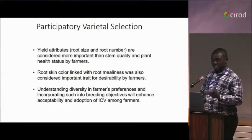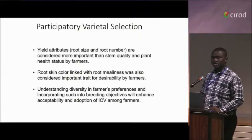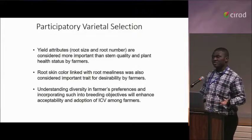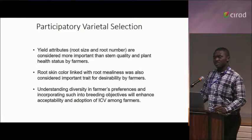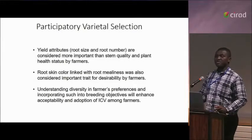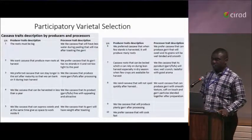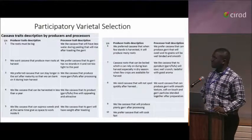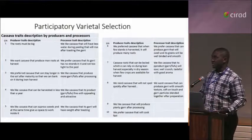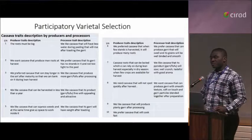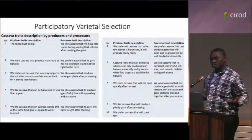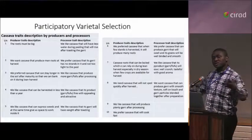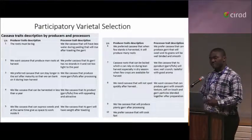There are traits that farmers describe which might not be captured in the ontology, and there is a way we should think about linking these. When you think about what producers and processors want in farmer-participatory varietal selection, the trait descriptions seem different. When processors talk about palatability, there are many traits that go into it. These farmer-described traits are in some way related to what is described in the cassava trait ontology, and we need to think of a way of linking them back.